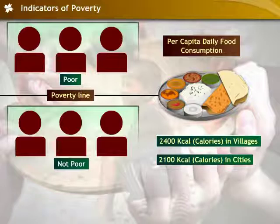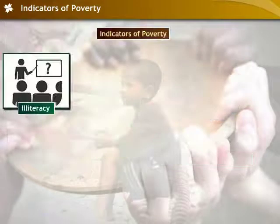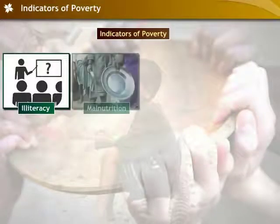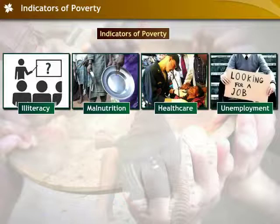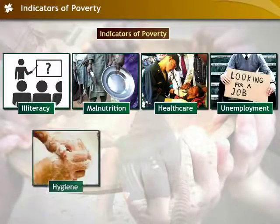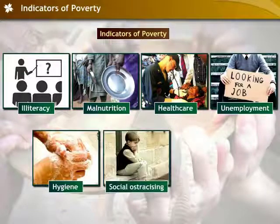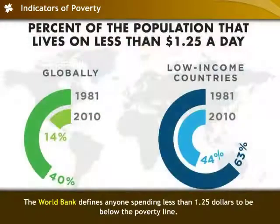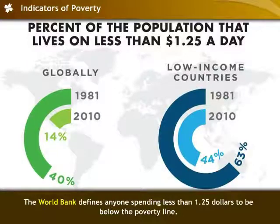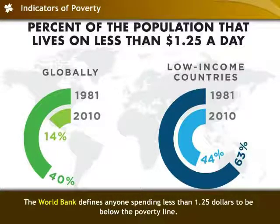Other indicators of poverty include levels of illiteracy, malnutrition, health care, unemployment, hygiene, social ostracizing and handicap. The World Bank defines anyone spending less than $1.25 per day to be below the poverty line.